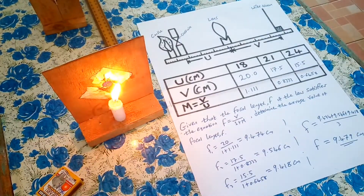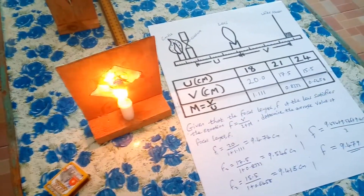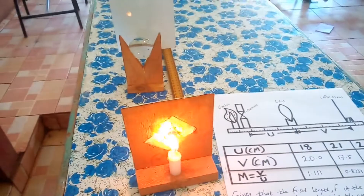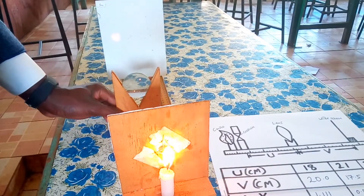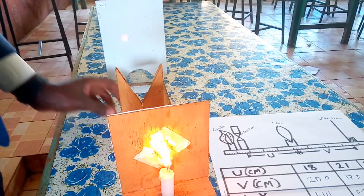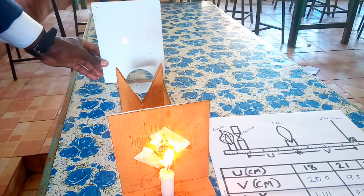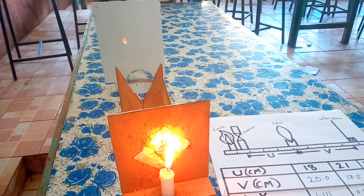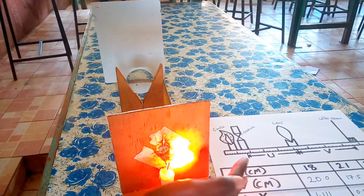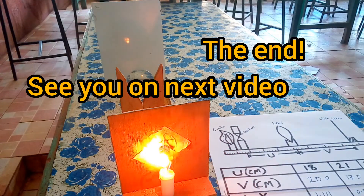So that is the focal length — approximately 9.47 centimeters — the average value of the focal length for the lens we used. Viewers, that is how you do this experiment. The key thing to notice is that when you are locating the sharp image, you should look for the outline of the image to find where it is very, very sharp. That marks the end of today's session. I wish you all the best.